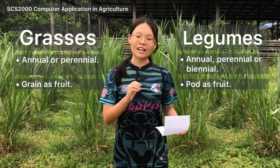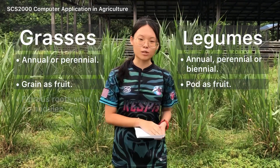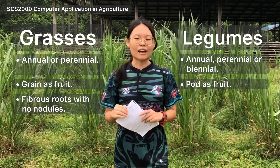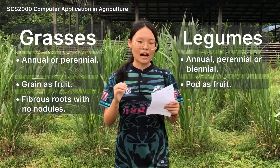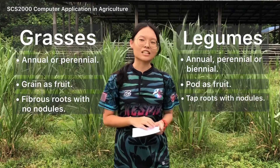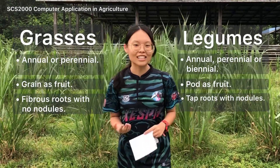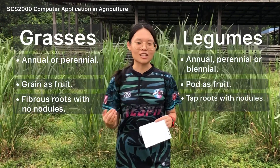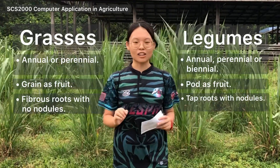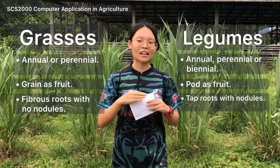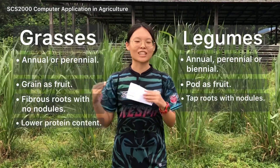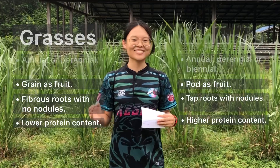Grasses have fibrous roots without nodules, while legumes have tap roots with nodules because they have symbiotic nitrogen-fixing bacteria inside the nodules. Last but not least, grasses have lower protein compared to legumes. Thank you.